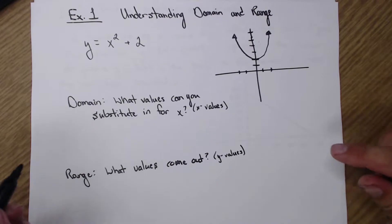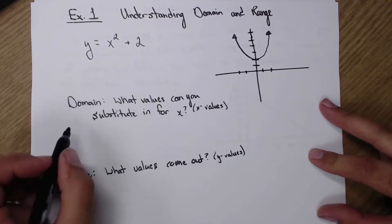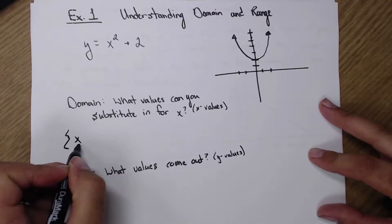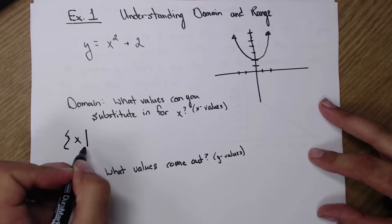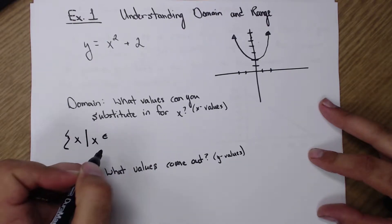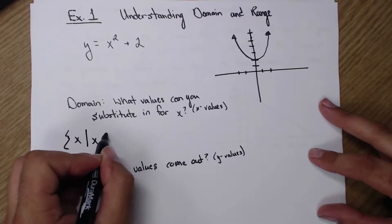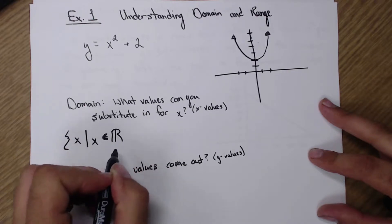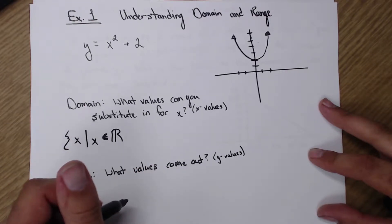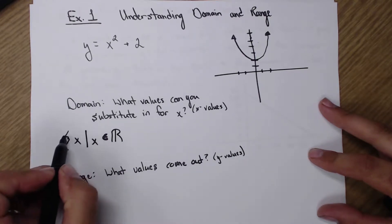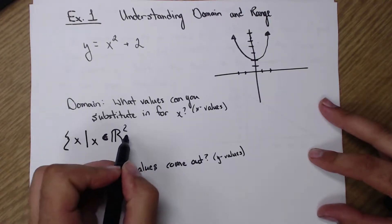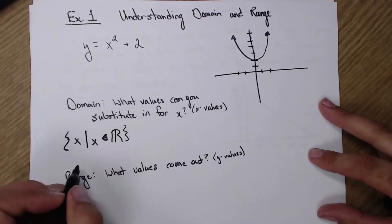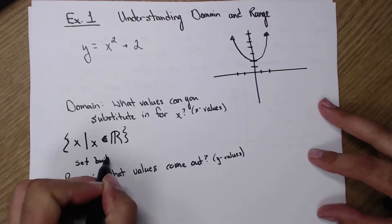We're going to start by writing this in set builder notation. If it's a set, it's going to have squiggly brackets. It's all x's such that x is an element — that symbol looks like a half circle with a line in the middle — of the real numbers. The symbol for real numbers is two vertical lines and then a regular R. And this is set builder notation.